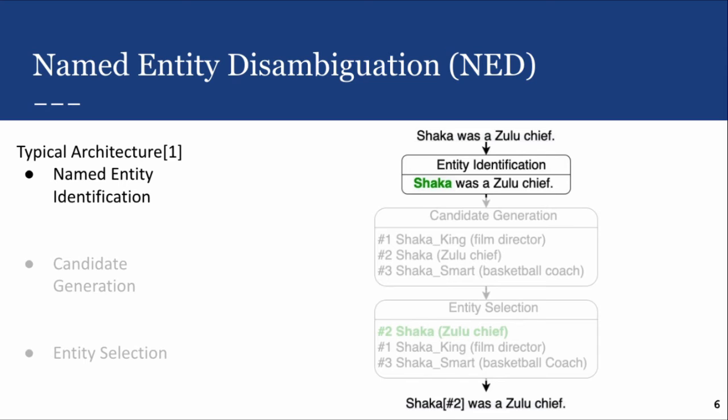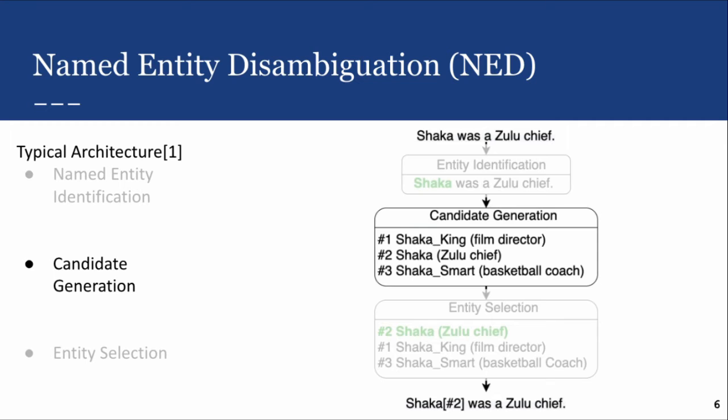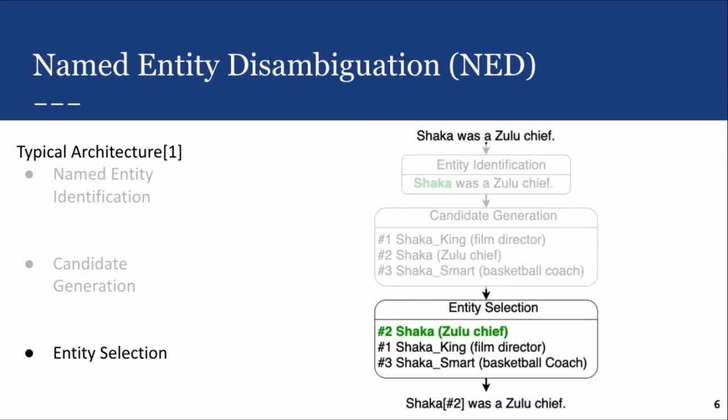Once these mentions have been identified they're passed on to the candidate generation module, which tries to extract a list of potential people from our database. Once these have been extracted they are passed on to the entity selection module, which tries to re-rank these candidates to select the person who is most likely to be referred to by our mention.